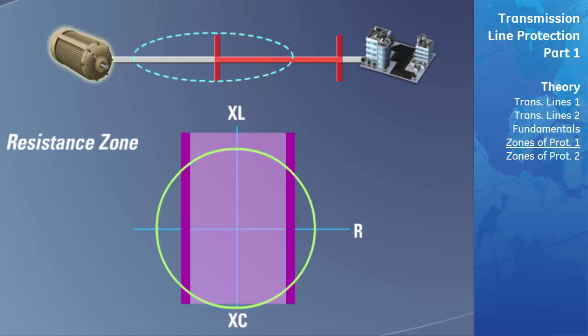For example, if an impedance zone detected the impedance of the line just slightly enter its zone of protection due to a fault occurring towards the end of its zone of protection, the resistive zone can be used to verify that the fault is actually on the transmission line because the impedance of the fault is mostly inductive. In this configuration, the resistance zone would be giving the impedance zone permission to trip.